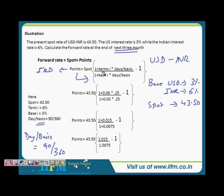We now know that the term currency interest rate is 6%, so we take 1 plus 0.06. Similarly, the base currency interest rate for USD was taken as 1 plus 0.03. Day basis was 90 by 360 which is 0.25. Anyone can calculate this.